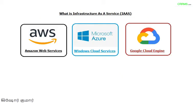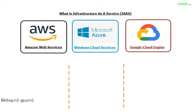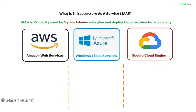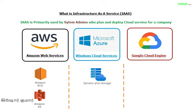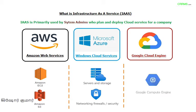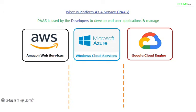IaaS is primarily used by system admins and architects who plan and deploy cloud services for a company. For AWS, the IaaS offerings include Amazon EC2 and Amazon S3. For Microsoft Azure, offerings include Azure Service, Storage, network firewalls, and security. For Google Cloud Engine, the IaaS offering is Google Compute Engine.